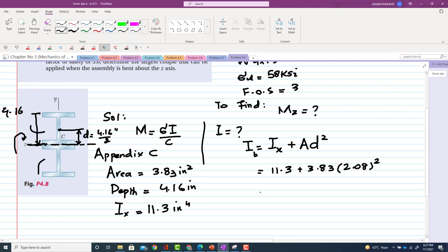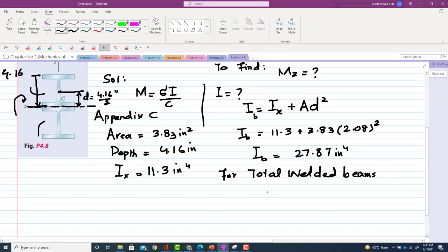Whole square. So this Ib comes out to be 27.87 inch to the fourth. For total welded beams, total inertia will be equal to 2 times Ib because the same beam is available below.